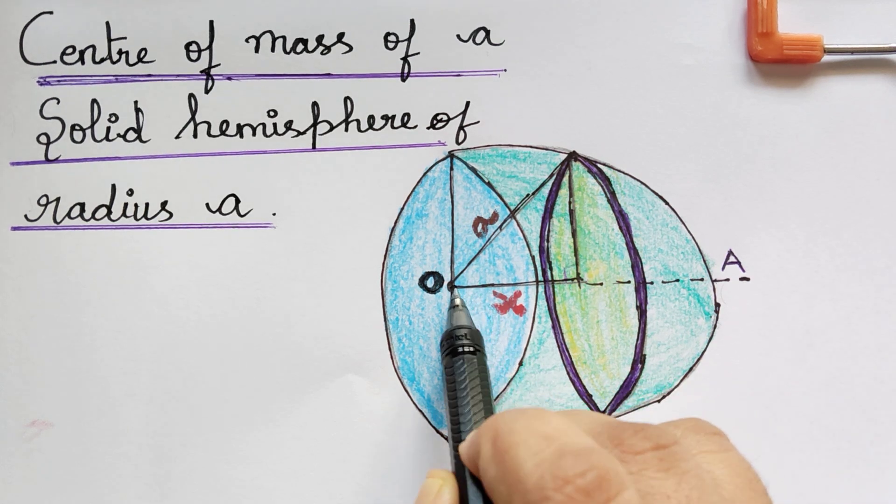Sometimes they may give the value of the radius a and ask you to calculate the center of mass; in that case, substitute the value of a into 3a/8. I hope you have understood how to find the center of mass of a solid hemisphere when radius a is given. In our next video, we will be finding the center of mass for a solid cone with height h. Please follow the next video lecture. Thank you.